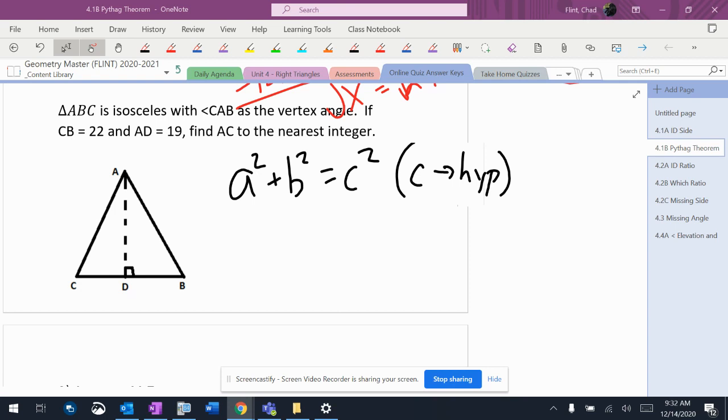So we have an isosceles triangle here, so we'll deal with what that means in a second, but it tells me that CD is 22 and AD is 19, and I want us to know what AC is.